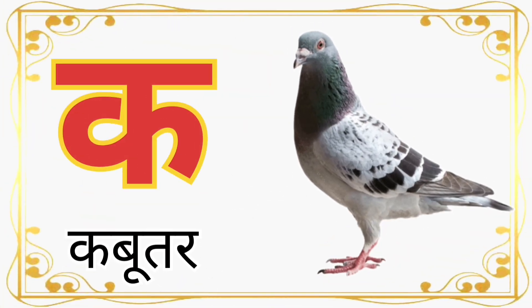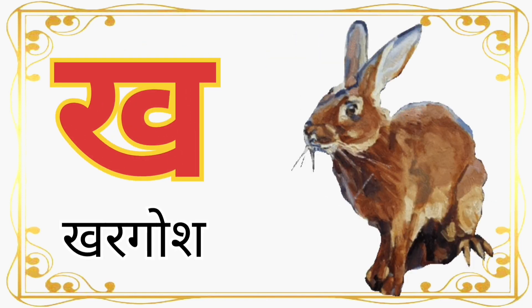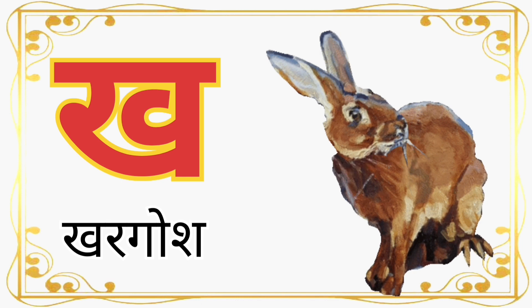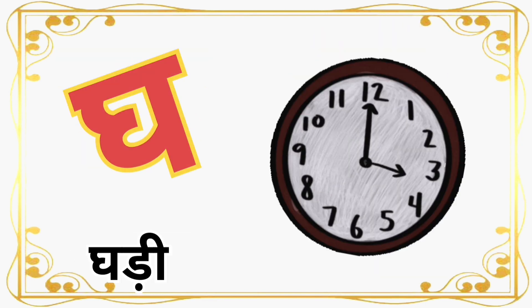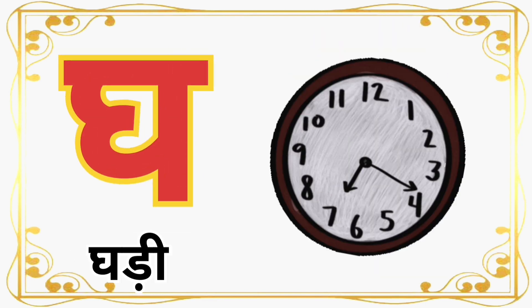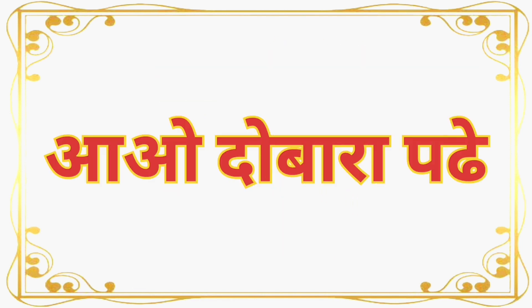क से कबूतर (Ka for pigeon). ख से खरगोश (Kha for rabbit). ग से गमला (Ga for flowerpot). घ से घड़ी (Gha for clock).